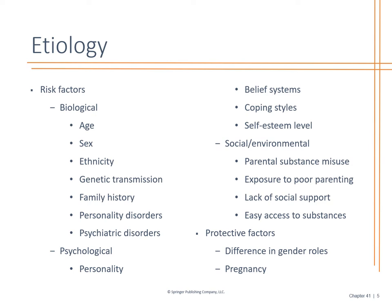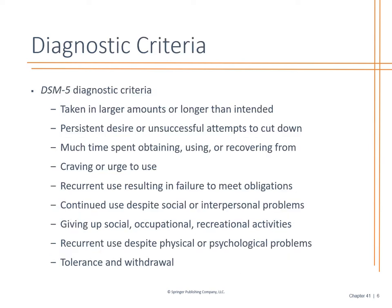Understanding that with women we worry about pregnancy, the difference in gender roles, and then the DSM-5 criteria. What meets the criteria for substance abuse? Larger amounts, that persistent desire — 'I can't function unless I have it' — that craving, being unable to participate in any activities, recurrent use, tolerance, and ultimately withdrawal leading to reuse again.